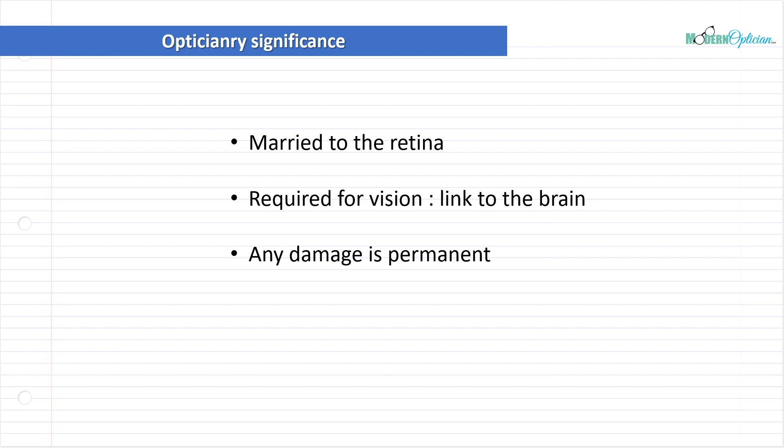Any damage is permanent. So you can't just have optic nerve damage and say we're just going to let this heal. Anything that's damaged in the optic nerve does not regenerate. So this is one of the main reasons why catching diseases that affect the optic nerve or keeping it protected, making sure everything is good, is extremely important because once you lose cells from that optic nerve, they are not coming back.